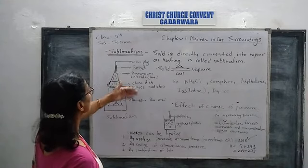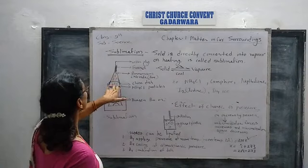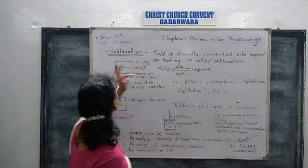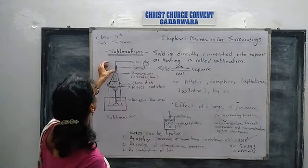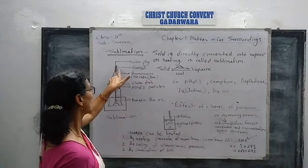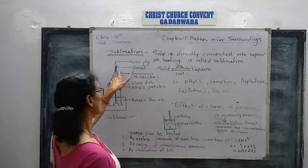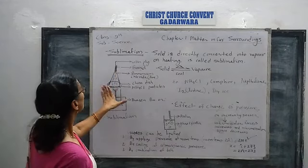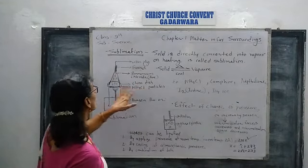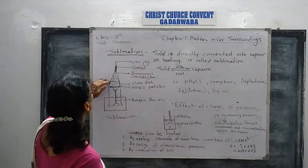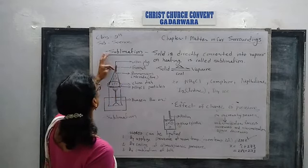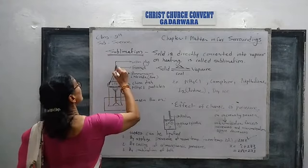When we heat the ammonium chloride particles, they change directly into vapour — solid is directly taken into vapour on heating. These vapours cool down and deposit on the stem of the funnel as solid. So the vapour cools down, deposits on the stem of the funnel, and we get solid ammonium chloride in pure form. This confirms that ammonium chloride is a sublime chemical.